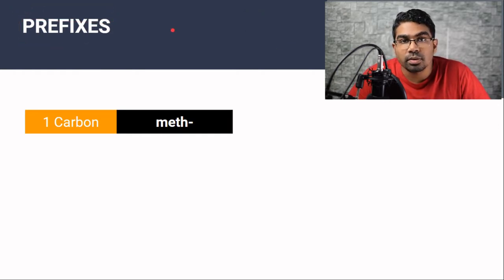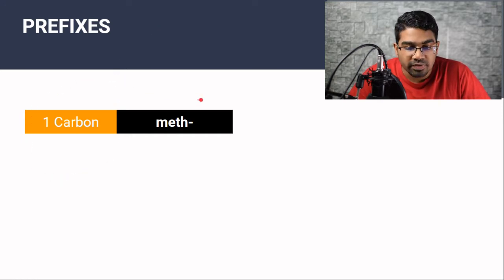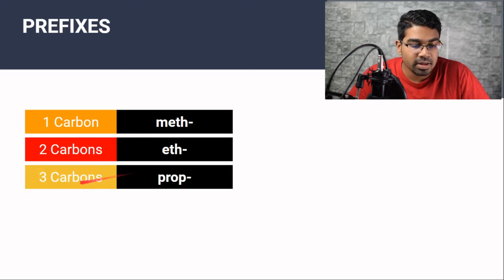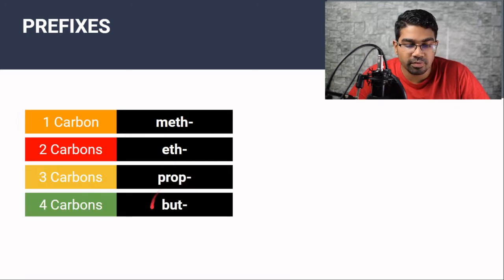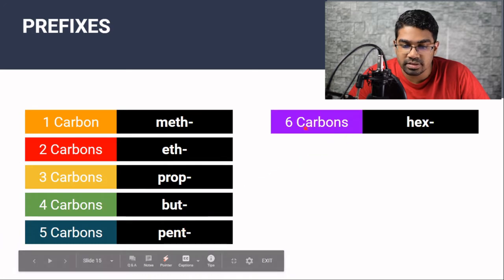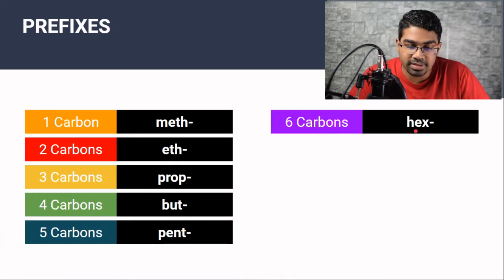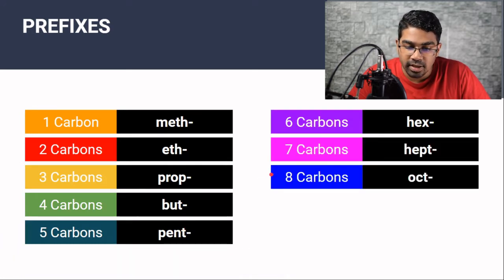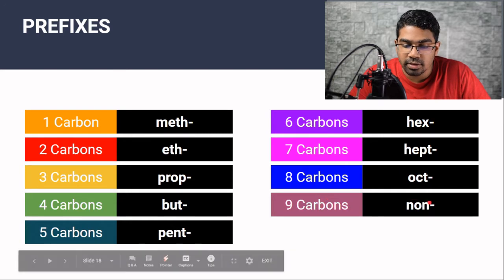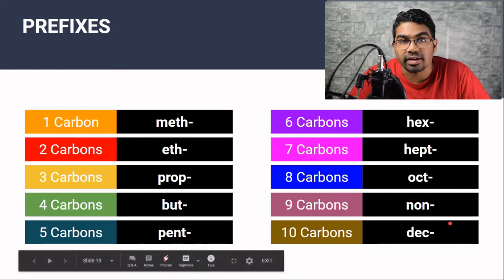If a carbon compound contains one carbon then the prefix meth is used. Two carbons: eth. Three carbons: prop. Four: but. Five: pent. Six: hex. Seven: hept. Eight: oct. Nine: non. And ten: dec.